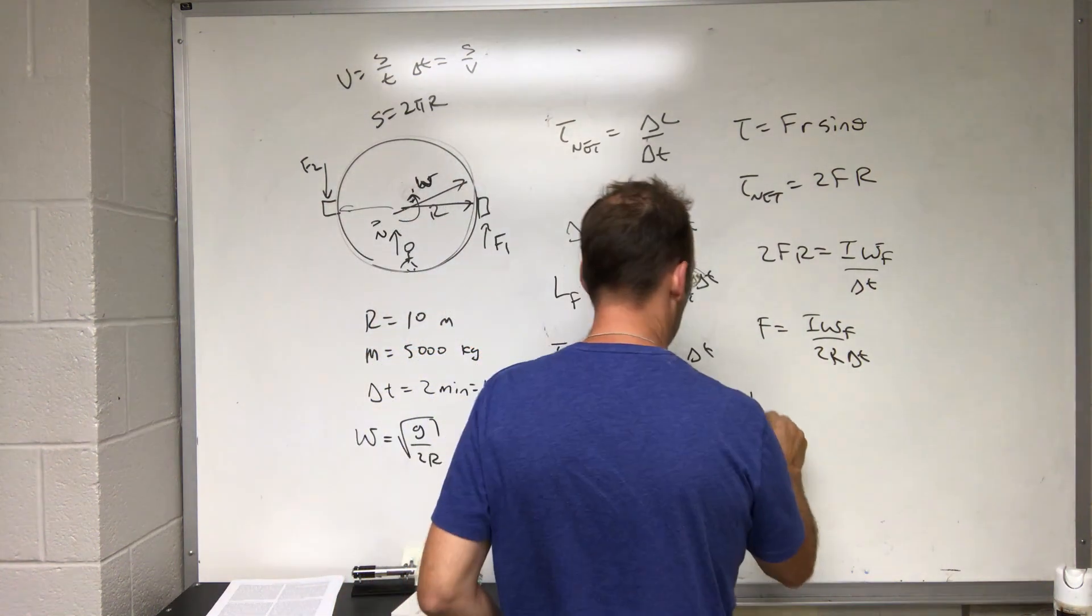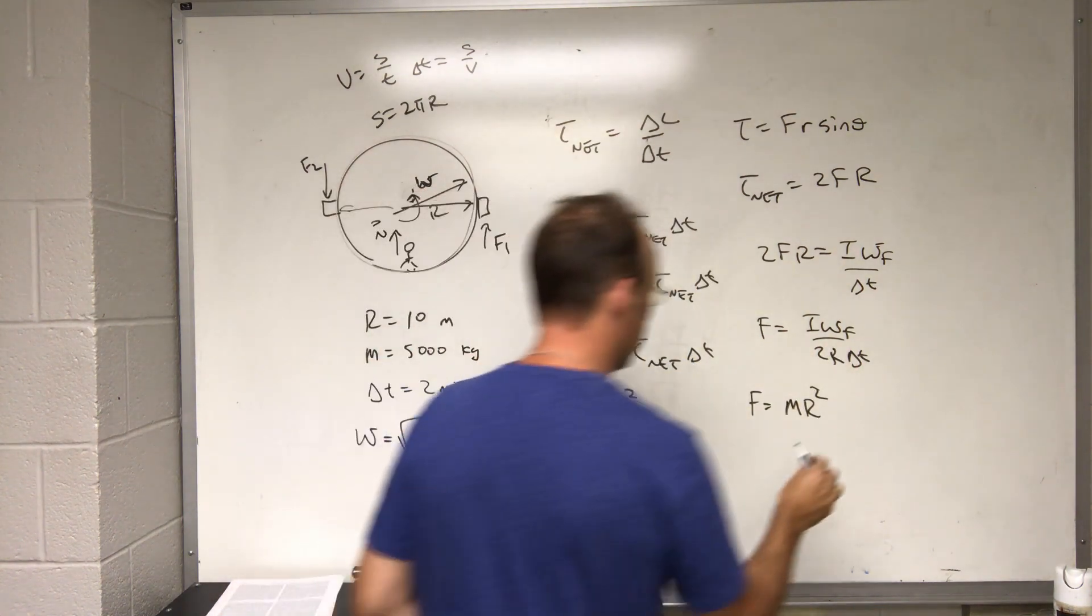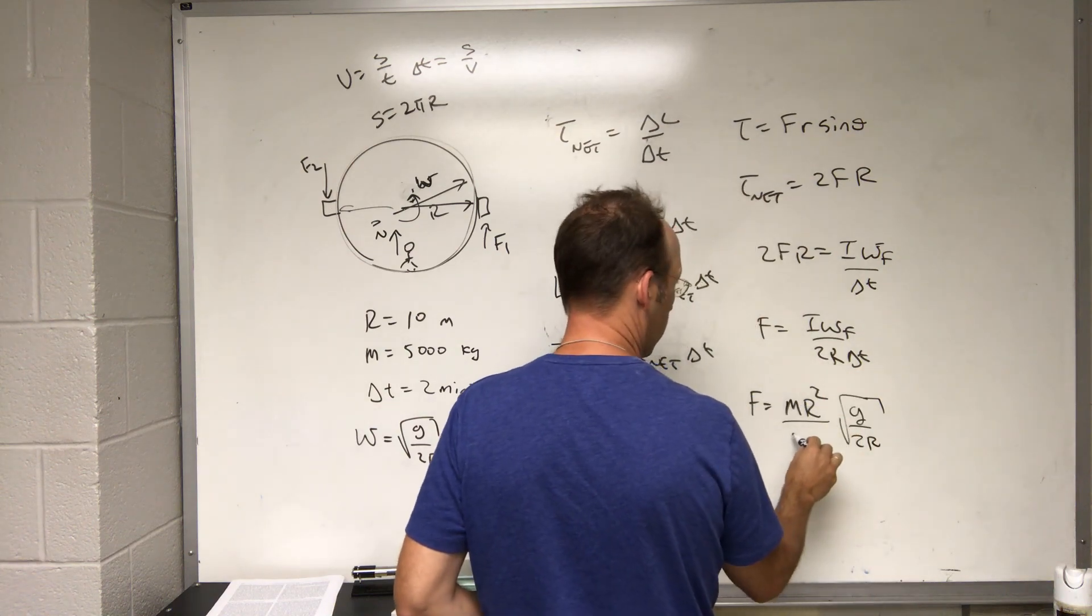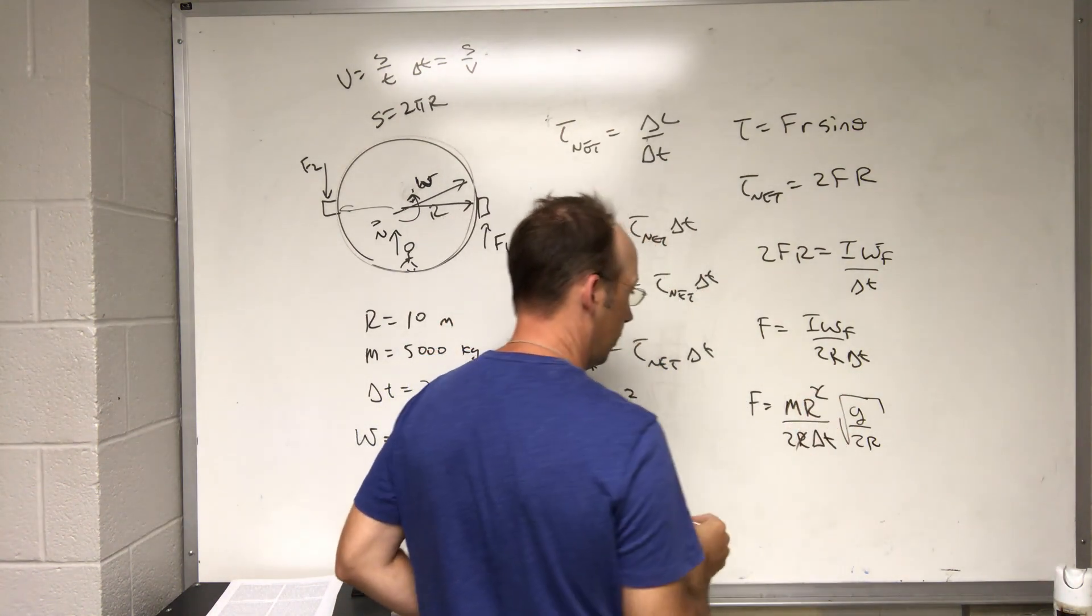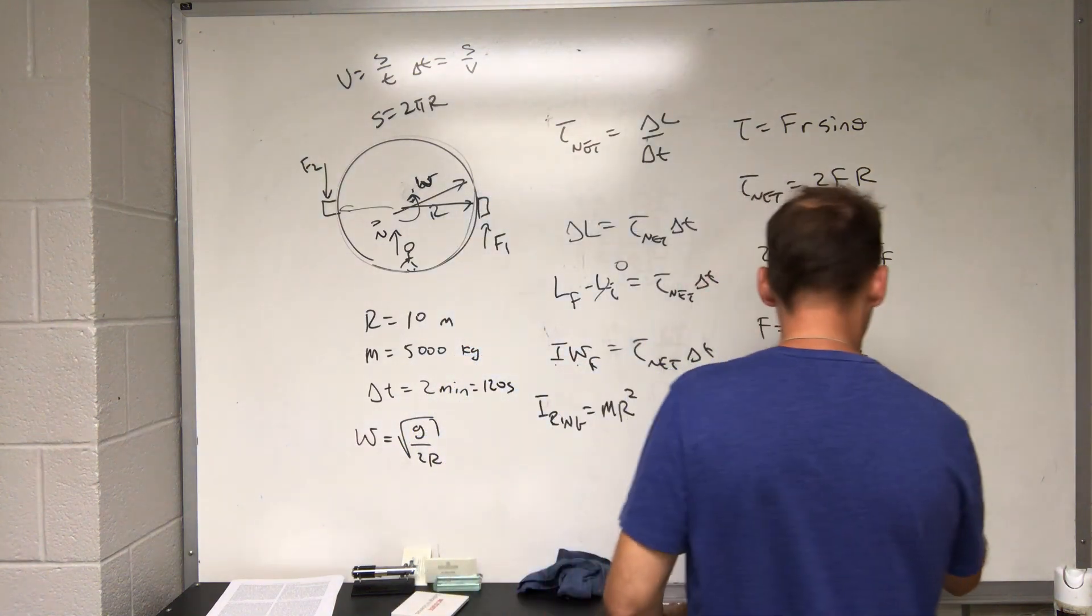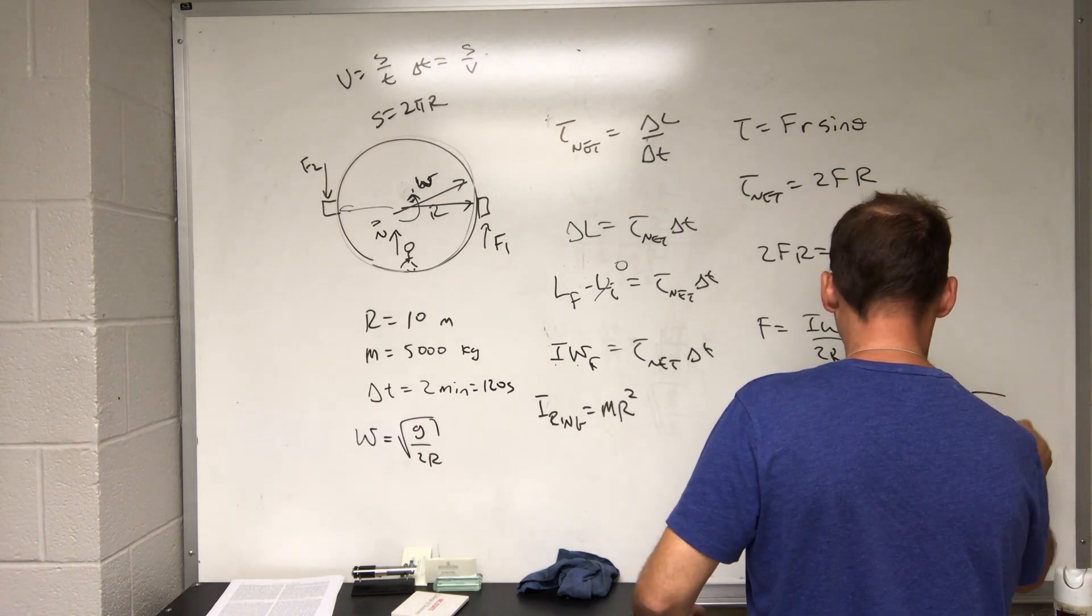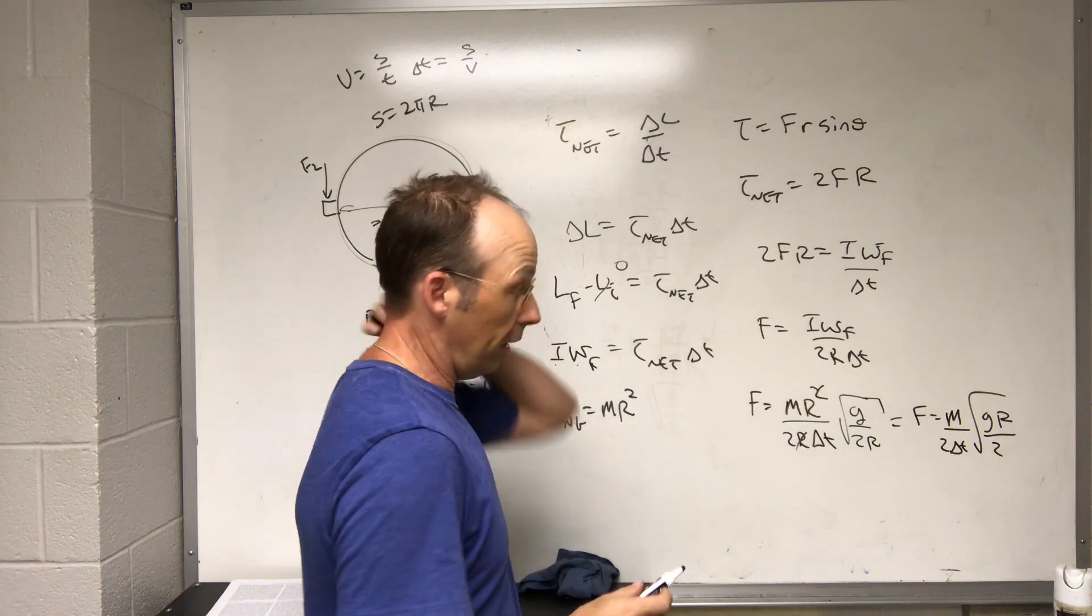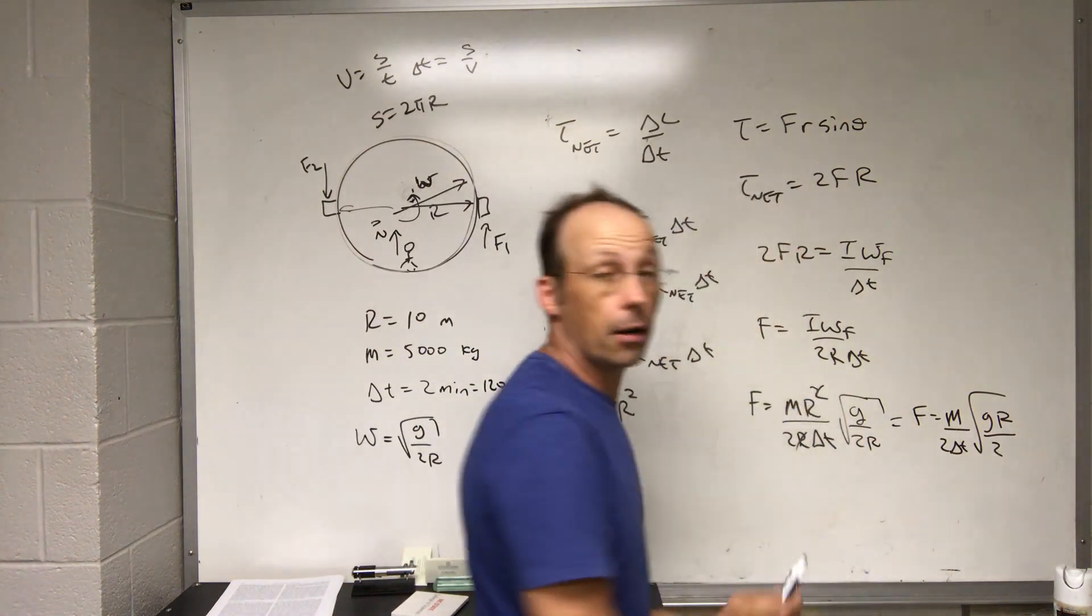Now let's start putting in things that we know. So I is going to be m r squared, omega final is the square root of g over 2 r, and then on the bottom I have 2 r delta t. This cancels, this cancels with that one. And if I bring that inside I get r squared and that cancels. So I get f equals m over 2 delta t square root of g r over 2. I could have done the two also. So I know everything. I know m is 5,000 kilograms, I know r is 10, I know two is the number two, and I know delta t is 120 seconds.